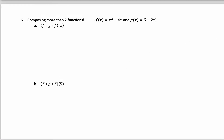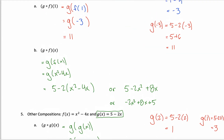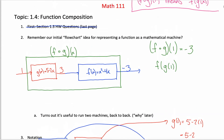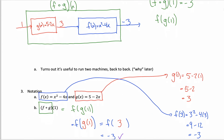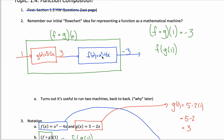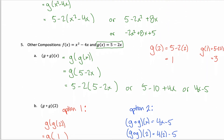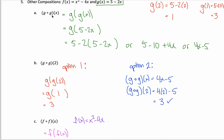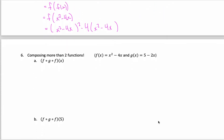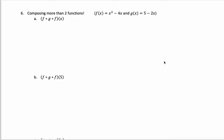In the previous videos, we learned how to take two different functions and compose them together to create a new function. This was kind of a flowchart idea, and we did some examples where f of x is x squared minus 4x and g of x is 5 minus 2x. We saw that you can compose a function like g with itself — g of g of x is a thing, as is f of f of x. We're not limited to two functions; composing more than two follows in almost the exact same way.